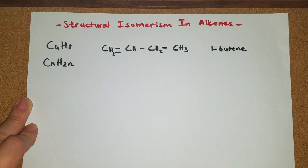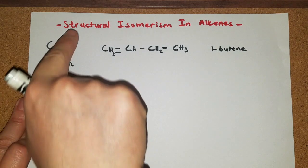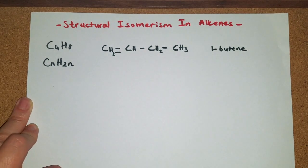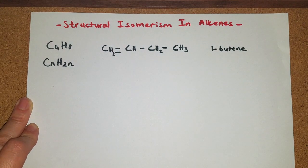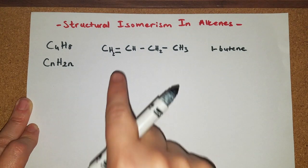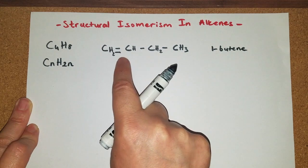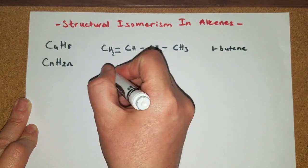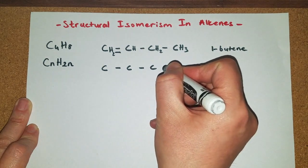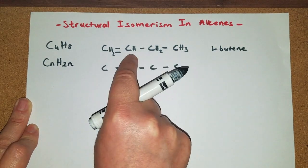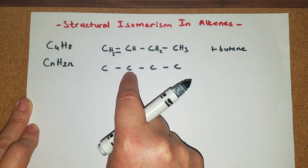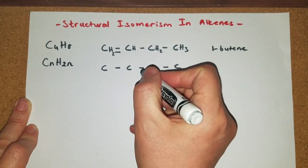Now for this compound you can draw several different structural isomers. How can you do so? First thing and the easiest thing that you can do is to change the location of the double bond. You simply can shift the double bond from between the first and second carbon atoms to between second and third carbon atoms like this.